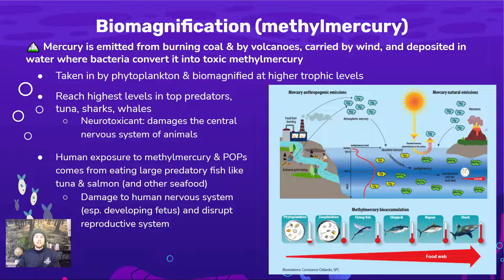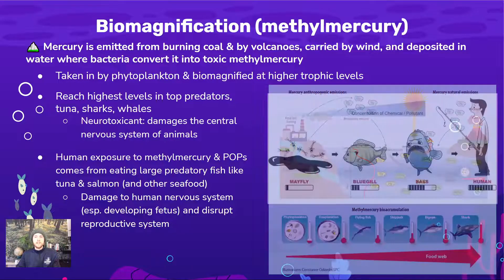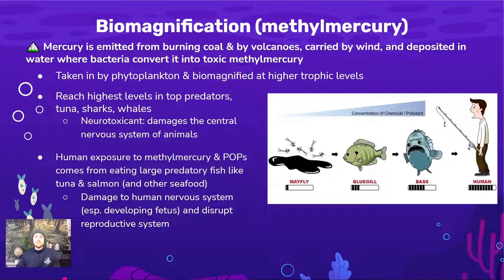Because methylmercury accumulates in the bodies of top predators and can be neurotoxic — damaging their nervous systems — humans can also be exposed to methylmercury from seafood. When we eat large predatory fish like tuna and salmon, that leads to methylmercury entering our body. When a human is added to this food chain as a quaternary consumer, the human may be exposed to a level of this pollutant far higher than the primary consumer in this ecosystem. Biomagnification is not limited to natural food systems — it can involve humans when we become high-level consumers in aquatic ecosystems contaminated with methylmercury.